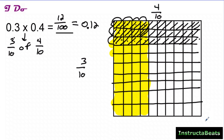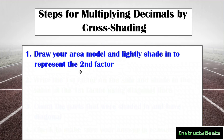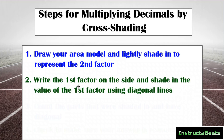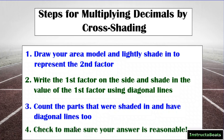Let's write down our steps for multiplying decimals by cross-shading. Step 1: draw your area model and lightly shade in to represent the second factor — we always start with the second factor because that multiplication sign means 'of.' Step 2: write the first factor on the side and shade in its value using diagonal lines. Step 3: count the parts shaded in with diagonal lines too. Step 4: check to make sure your answer is reasonable — always estimate first when multiplying decimals.